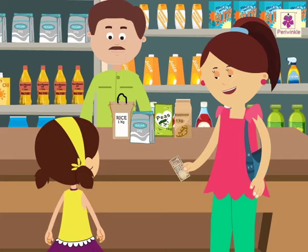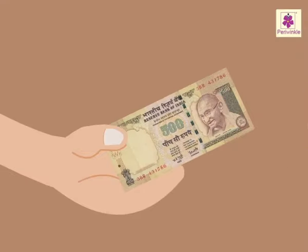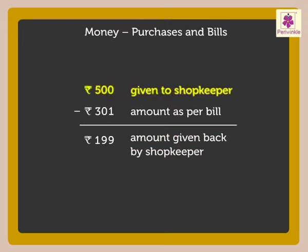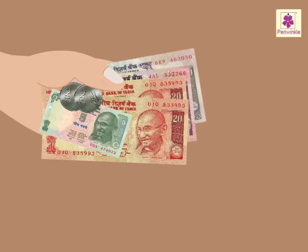Look, I am giving the storekeeper a five hundred rupee note. How much amount will the shopkeeper give back? The amount given to the shopkeeper minus the amount as per the bill equals the amount given back by the shopkeeper — that is, five hundred minus three hundred and one equals one hundred and ninety-nine rupees. The shopkeeper gives one hundred and ninety-nine rupees back.